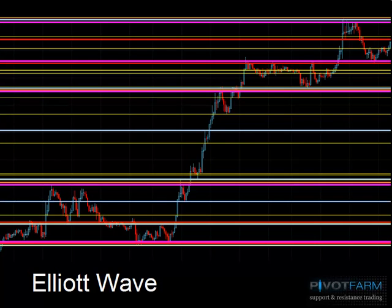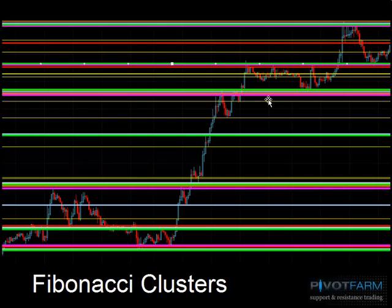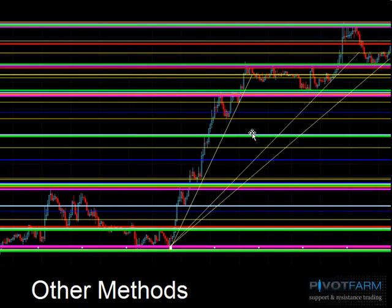We then add Elliott Wave into the mix — the Elliott Wave lines are shown in pink and also cover multiple time frames. We then look at the Fibonacci clusters, which are relatively unique to our approach. We look at Fibonacci extensions and retracements across multiple time frames, and where we get clustering of those different extensions and retracements across time frames — shown as the green lines — those are the very best Fibonacci zones. Finally we add all other methods including trend lines, open/high/low/close, and open gaps.